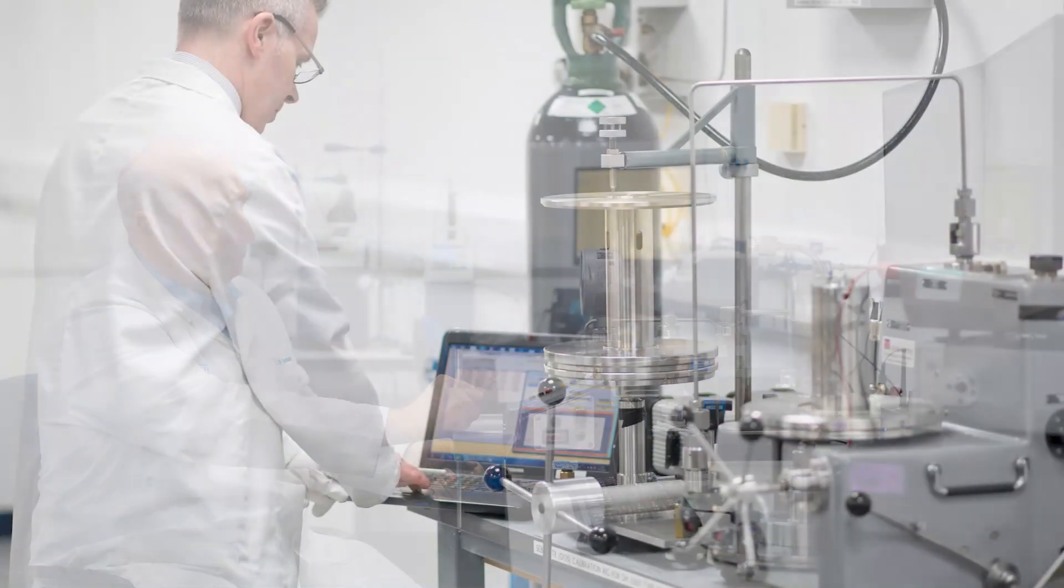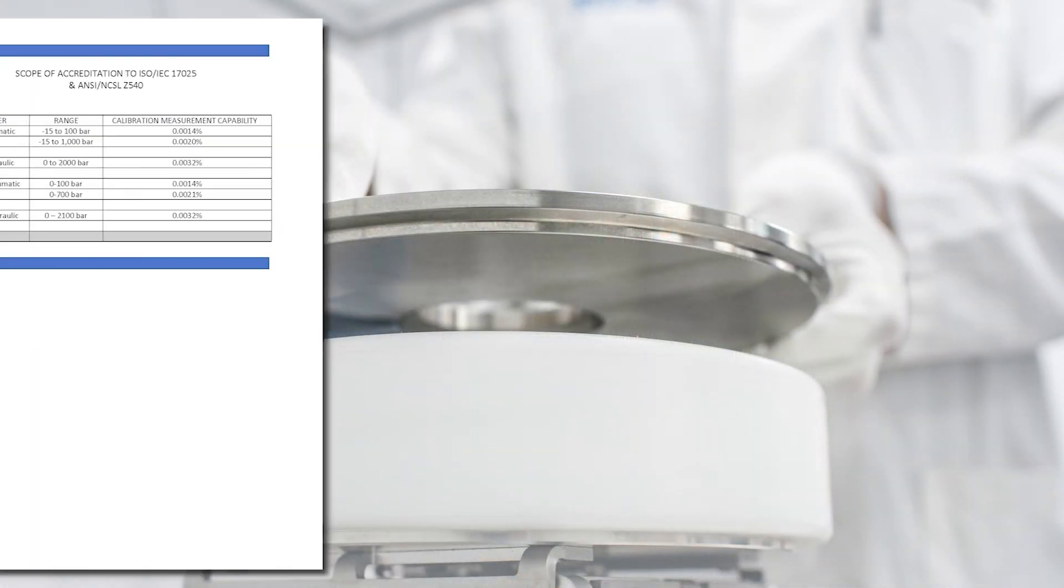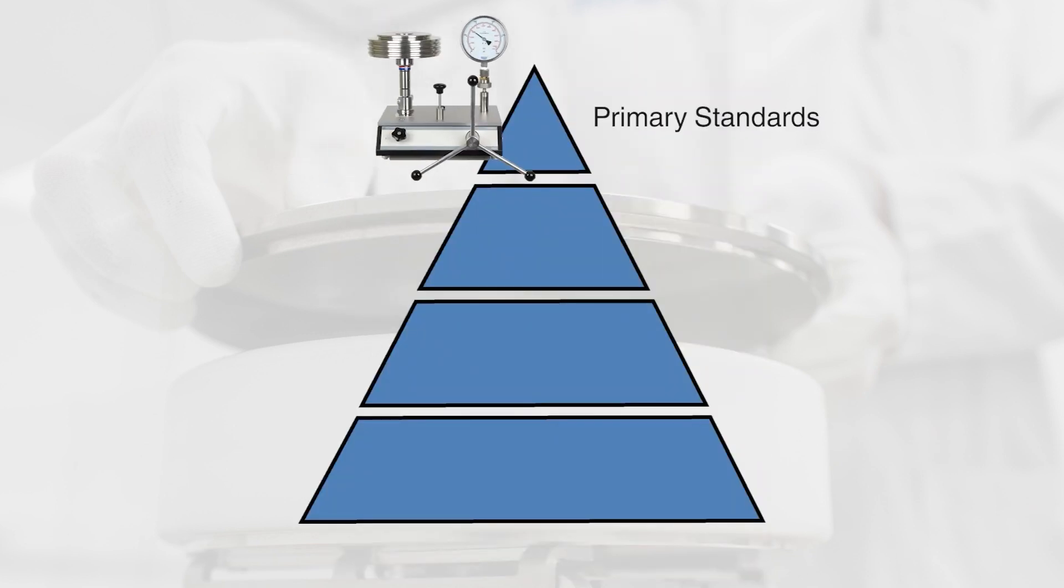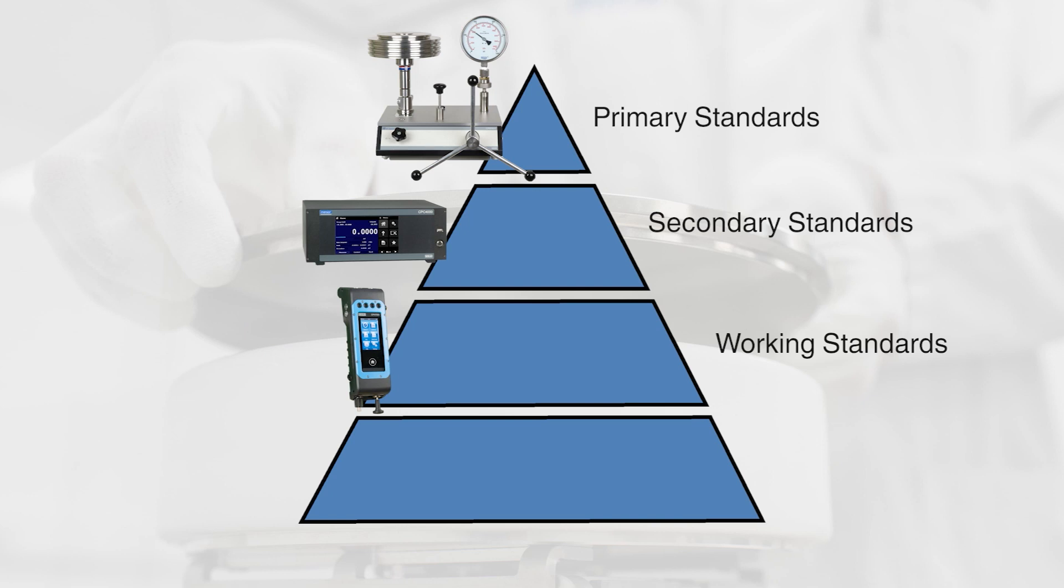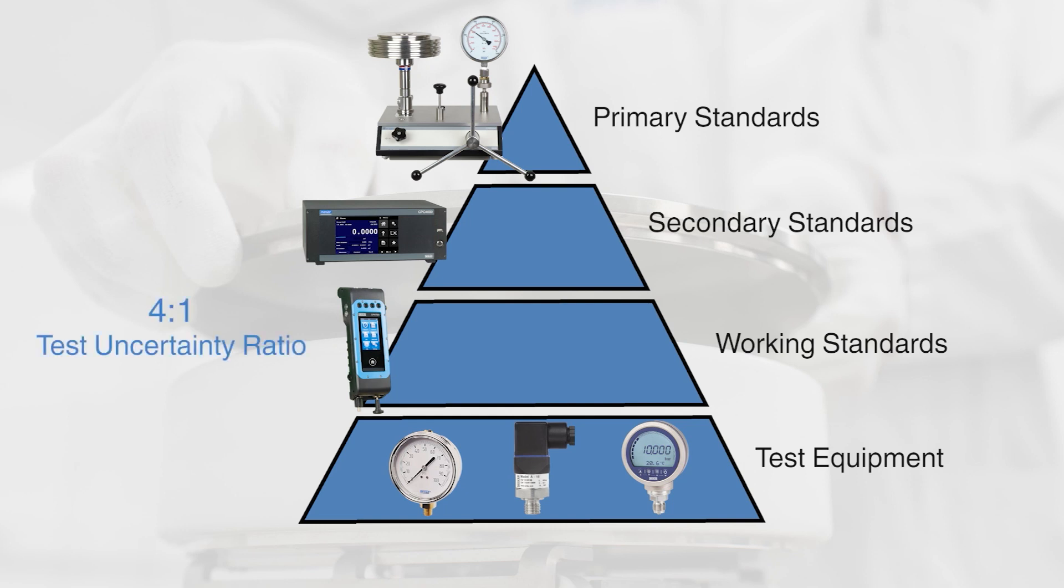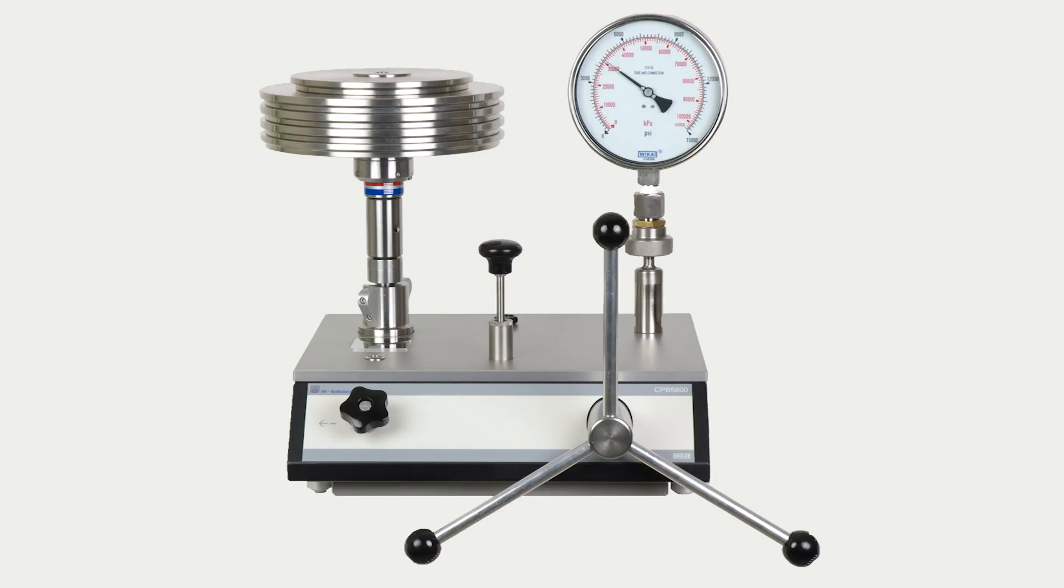A pressure calibration laboratory is equipped with standards to fulfill the requirements of the expected scope of operation. This means that the accuracy and range of the standards must be adequate to calibrate the expected workload. The primary standard, secondary standards and working standards must all be selected with respect to the accuracy of the device under test, while maintaining the recommended test uncertainty ratio, typically 4 to 1. To achieve these goals, different deadweight testers can be utilized.